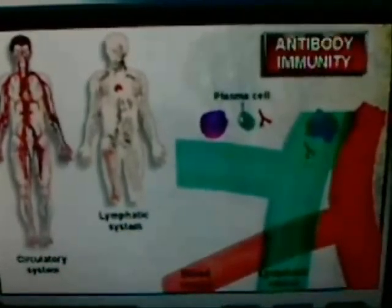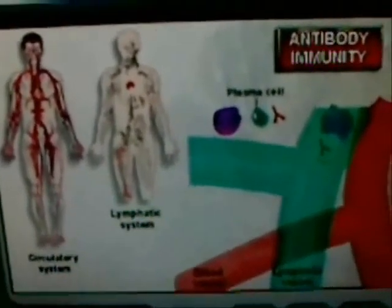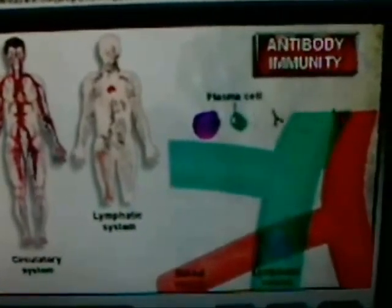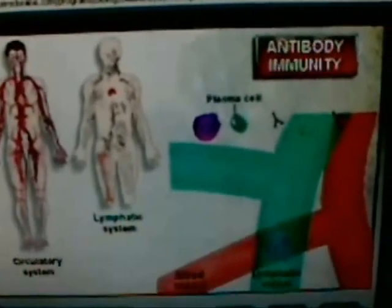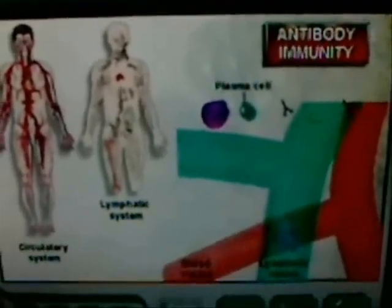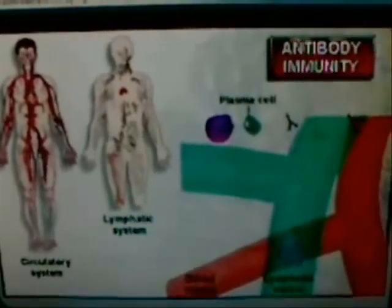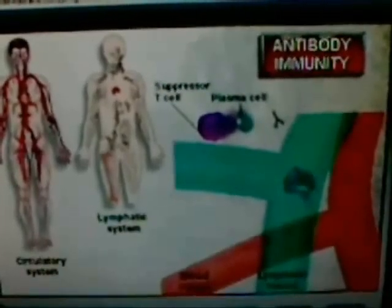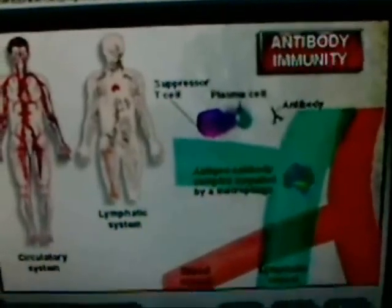As antibodies are produced by plasma cells, they are released into the circulatory and lymphatic systems. Here, they bind to the foreign antigens to form antigen-antibody complexes. These complexes are engulfed and destroyed by phagocytes. As the bacteria are overcome by the antibodies and phagocytes, another type of T cell called suppressor T cells release substances that cause the plasma cells to slow down and eventually stop antibody production. This controls the immune response.